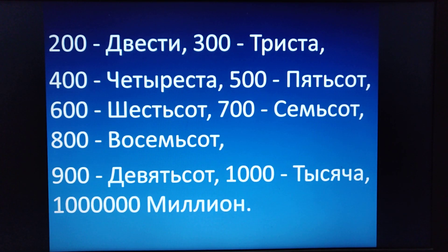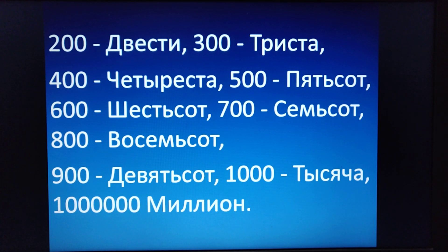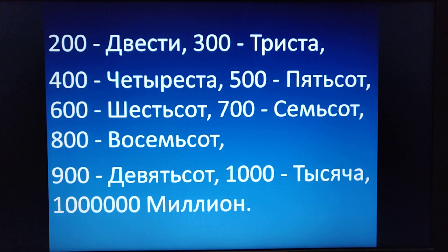For two hundred the word in Russian is Dveschi. Three hundred is Trishyata. Four hundred is Chaterishyata. Five hundred is Pach-Pach-Soth. Six hundred is Shes-Soth. Seven hundred is Shem-Soth. Eight hundred is Vosem-Soth. Nine hundred is Jivit-Soth. And thousand is Tishicha. And one million is Million. Repeat: Dueschi. Trishyata. Chaterishyata. Pach-Soth. Shes-Soth. Sem-Soth. Vosem-Soth. Jivit-Soth. Tishicha. And million.